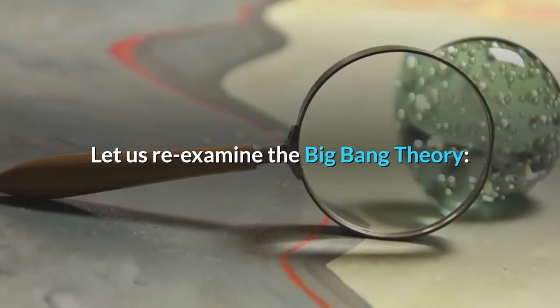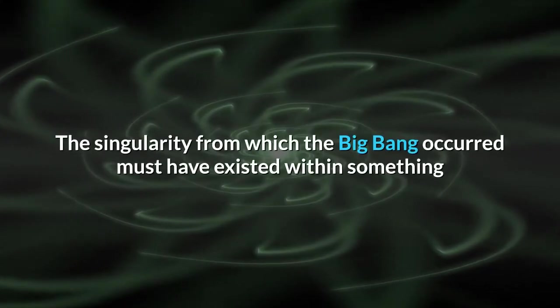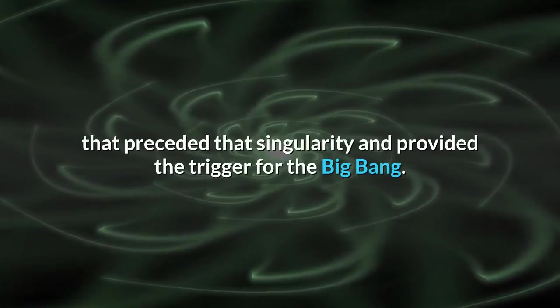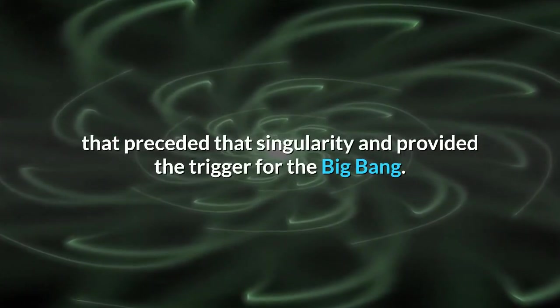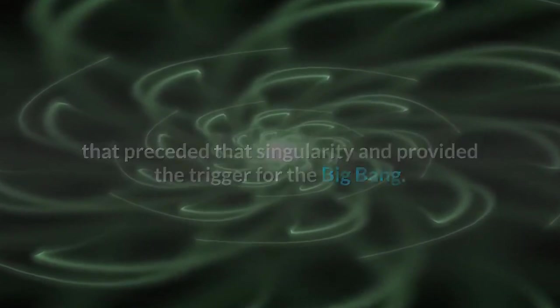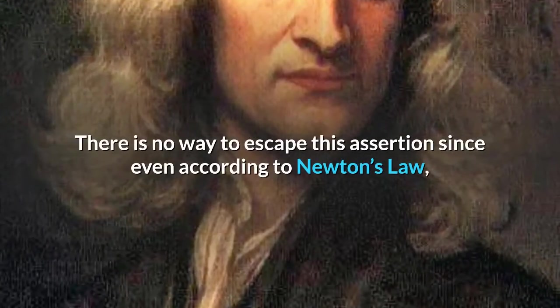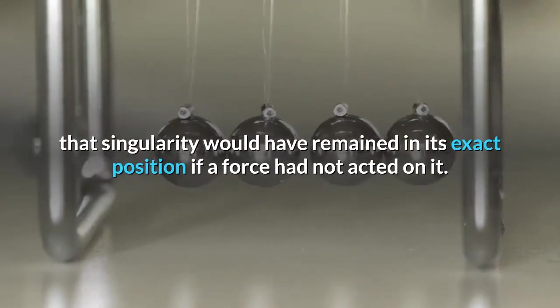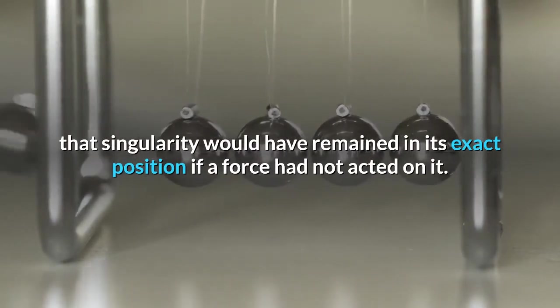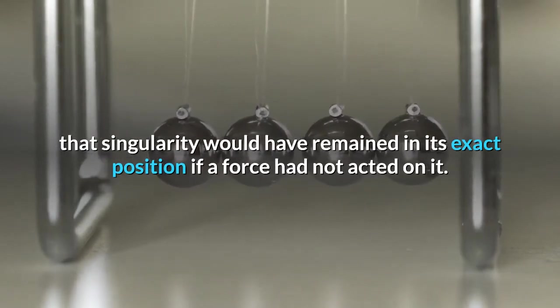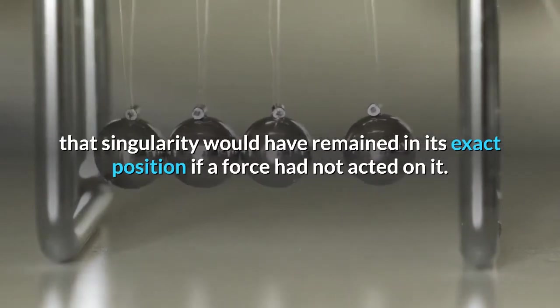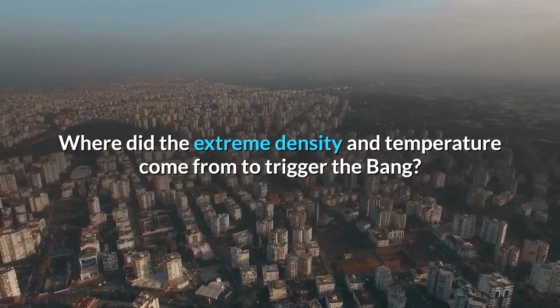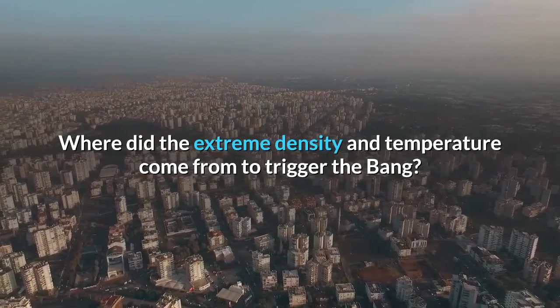Let us re-examine the Big Bang Theory. The singularity from which the Big Bang occurred must have existed within something that preceded that singularity and provided the trigger for the Big Bang. There is no way to escape this assertion since even Newton's law tells us that the singularity would have remained in the same position if a force had not acted on it. And the question is, the extreme density and extreme pressure that triggered the Big Bang, where did they come from?